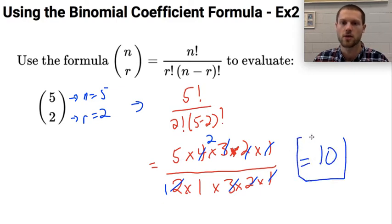So the number of ways that you can choose 2 things out of 5 is 10. And you can verify this with Pascal's triangle. I'll talk about that in just a second.